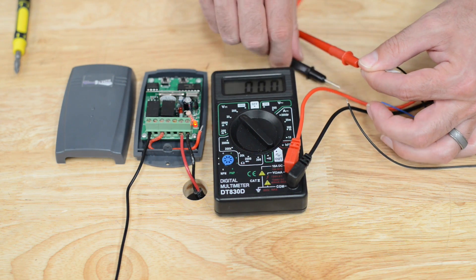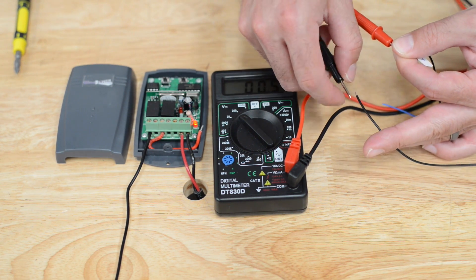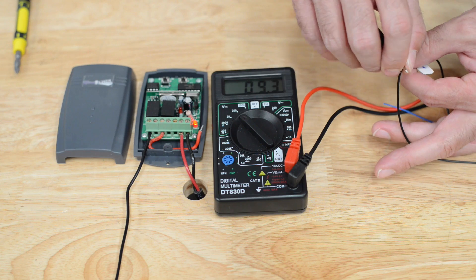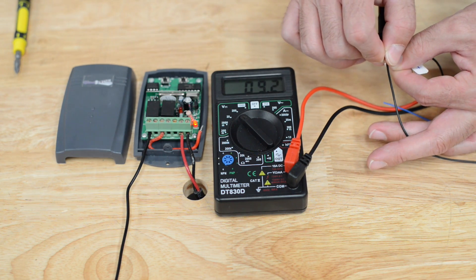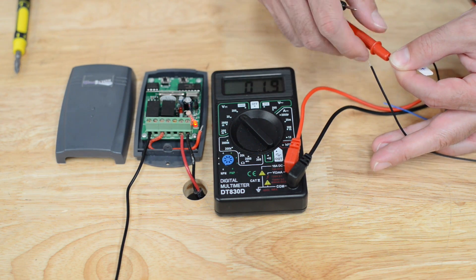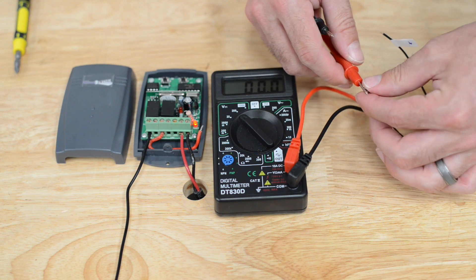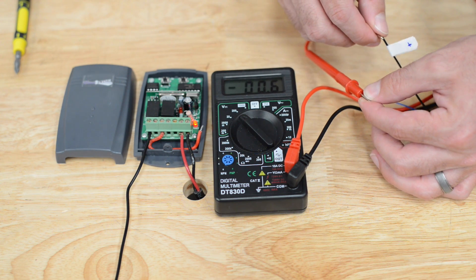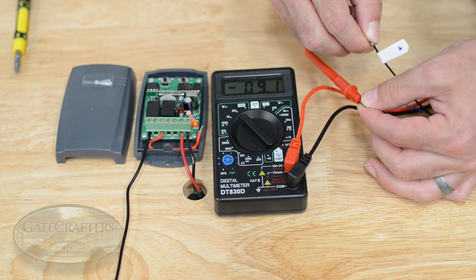If you notice, put the red lead on the positive that I know is positive, the black lead on the negative, it says 9.2 volts. However, with our multimeter, if we put it on the opposite way, it shows negative 9.1 volts.